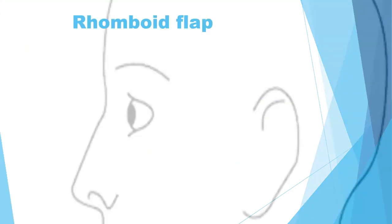To design a rhomboid flap, we first need a defect. This is a defect on the side of a face, as you can see from the background diagram. The temple area is a very common area where we might perform a rhomboid flap.